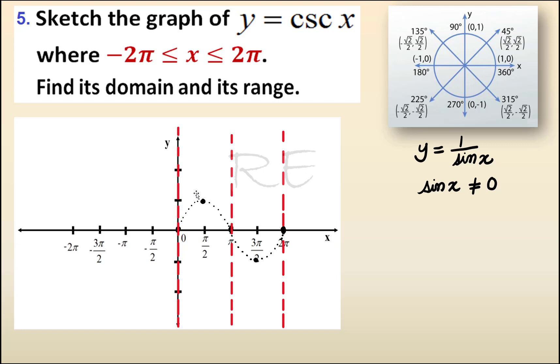Since sine π/2 is 1, π/2, 1 is part of the graph of cosecant. Since sine 3π/2 is negative 1, 3π/2, negative 1 is a point on the graph. And the curve will get closer and closer to the asymptote and not touch it.